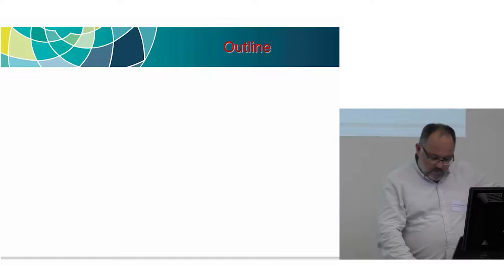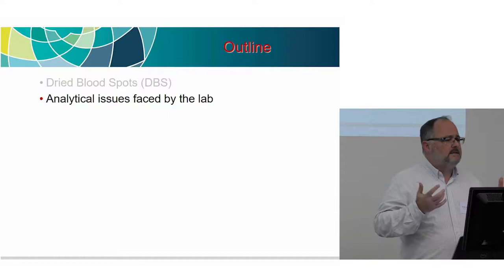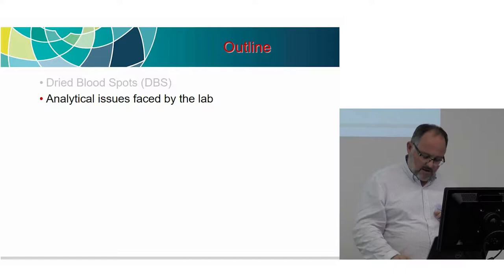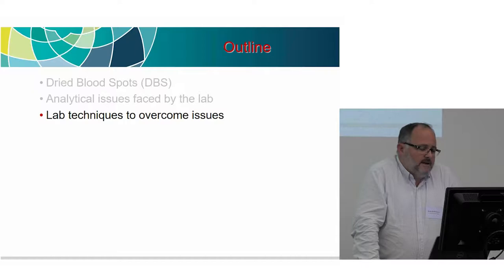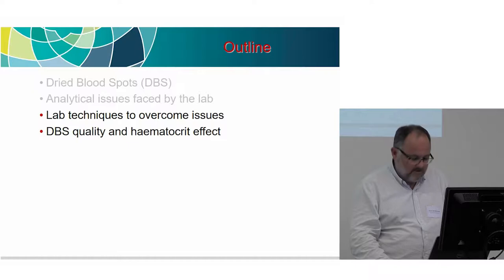So let's have a quick look at an outline of what we'll talk about. We'll talk about dry blood spots, and this is going to be very much a perspective from the lab. We've talked about developing and validating assays, but it's a lot harder when you consider developing an assay that's robust — that you can run day to day with consistency. We'll talk about analytical issues faced by the lab, how we overcome these issues, dry blood spot quality, and hematocrit.